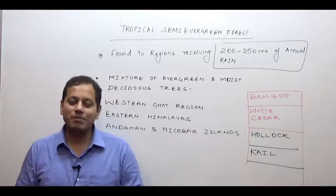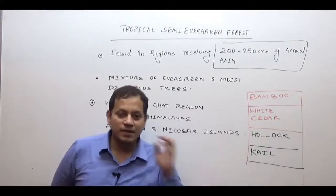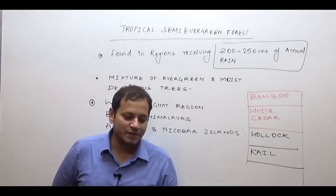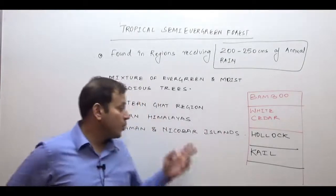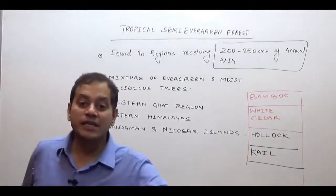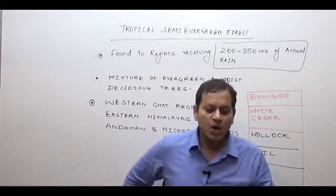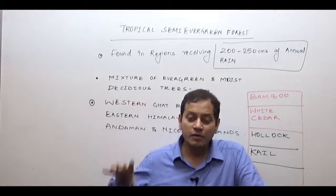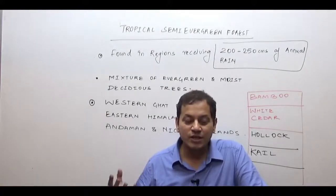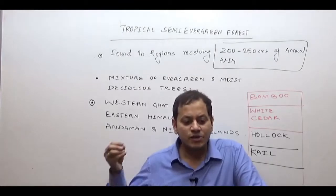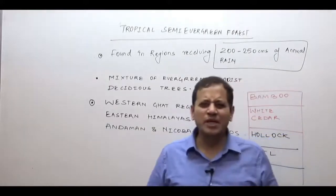There is no shortcut to remember these species: bamboo can grow in deciduous and evergreen regions so bamboo will be present everywhere. Remember white cedar, holloq, and kale are of semi-evergreen. UPSC can ask in which state white cedar is found — remember any state of northeast India. The British were aware of the economic value of these forests and in the Kumaon-Garhwal region of Uttarakhand they cleared this forest and replaced it with cheer pine for construction, and introduced coffee and tea plantations in Northeast India.